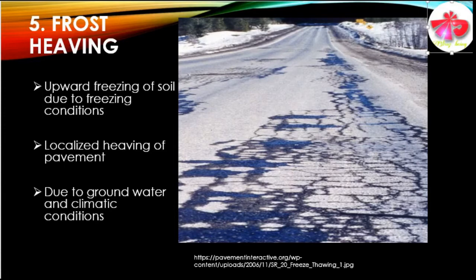The fifth type of failure in the flexible pavement is frost heaving. In frost heaving, there is an upward movement of soil due to freezing conditions and actions, resulting in localized heaving of the pavement surface. It is mainly caused due to groundwater and climatic conditions.